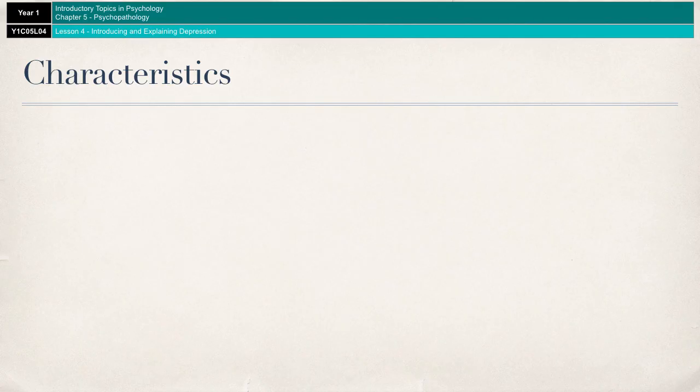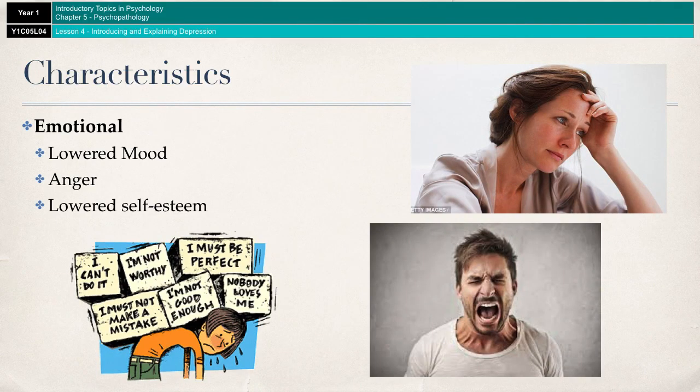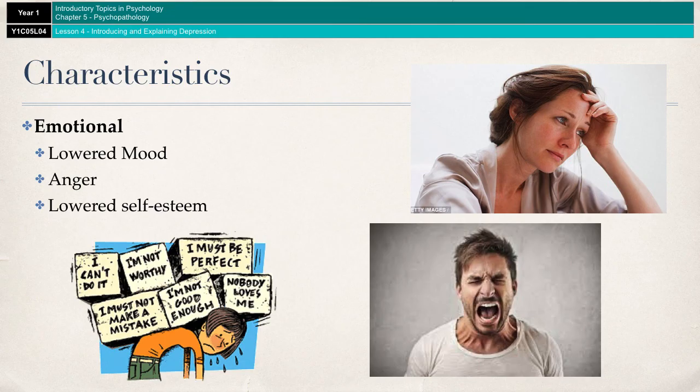Moving on, we'll have a look at the emotional characteristics of depression. A formal diagnosis of major depressive disorder requires the presence of at least five symptoms, and must include either sadness or loss of interest and pleasure in normal activities. Sadness is the most common description that people give of their depressed state, along with feeling empty. Associated with this, people may feel worthless, hopeless, or experience low self-esteem.